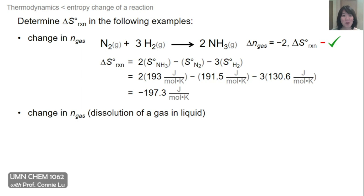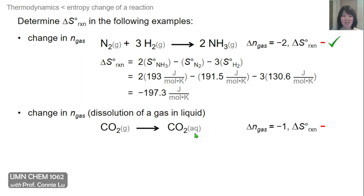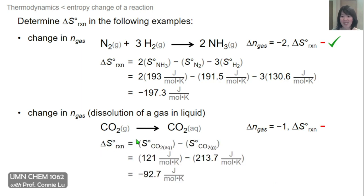In the next example, we dissolve a gas in a liquid, which also results in a change in moles of gas. Carbon dioxide gas dissolves in water to form CO2 aqueous. Because delta N of gas is minus one, we expect a negative entropy change. Quantitatively, delta S equals the entropy of CO2 aqueous minus the entropy of CO2 gas. Plugging in values from Appendix B gives a delta S of minus 92.7 joules per mole Kelvin, confirming the qualitative assessment.